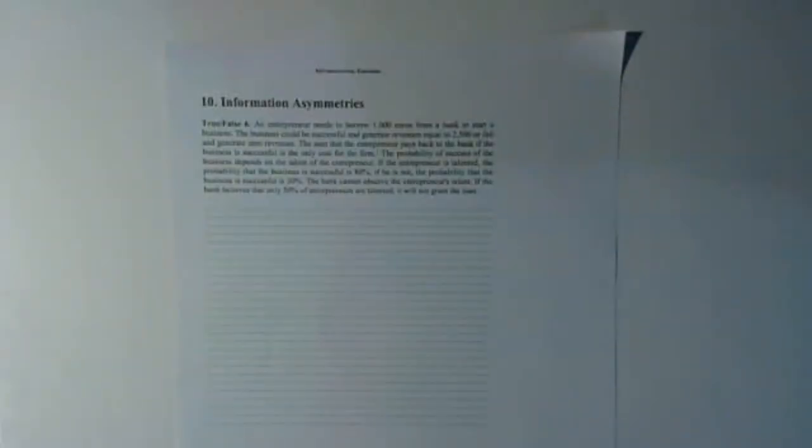Hi everybody, we are now going to solve true-false number six: information asymmetries. We have an entrepreneur who needs to borrow 1,000 euros from a bank to start a business. The business could be successful and generate revenues equal to 2,500, or fail and generate zero revenues. The sum that the entrepreneur pays back to the bank if the business is successful is the only cost for the firm.